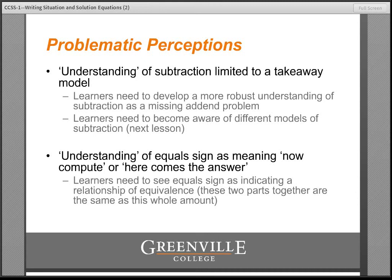Children often develop a very limited understanding of subtraction, equating it with take-away. In reality, take-away is only one of three interpretations of subtraction, and we don't want children to develop such a limited perspective. Compare problems are an example of another type of subtraction where there's no real action — no items coming or going — and so it's difficult for children to make sense of that in a take-away framework. That's why we don't want to set them up for problems down the road.